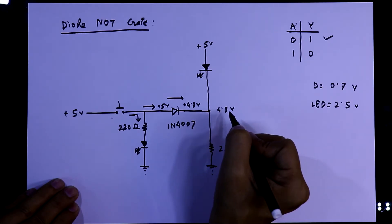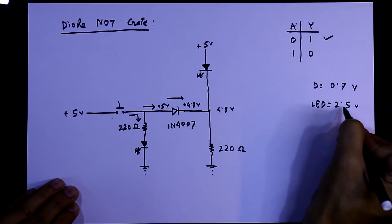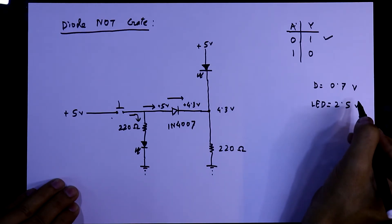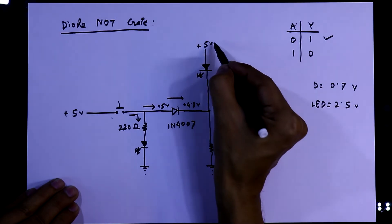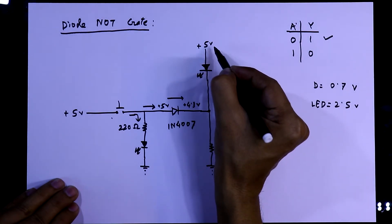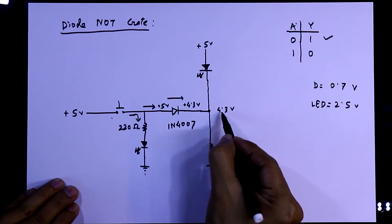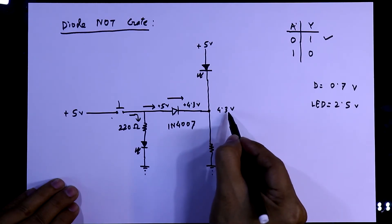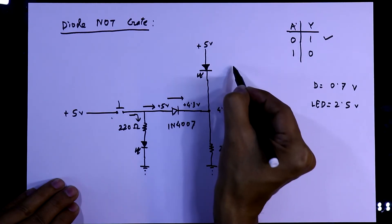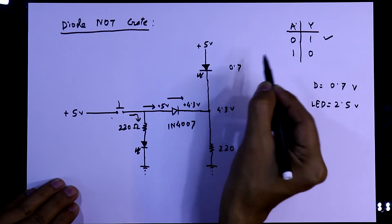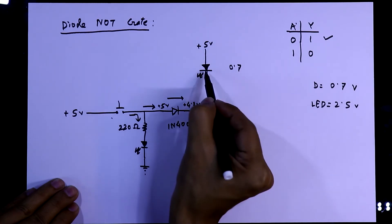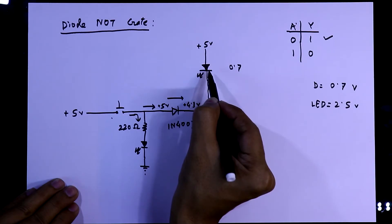To activate an LED, we need minimum of 2.5 volt. But the potential difference between these two points, that is 5 volt and this 4.3 volt, it is only 0.7 volt. So with this volt, this LED cannot glow. So that is why this LED will be turned off.